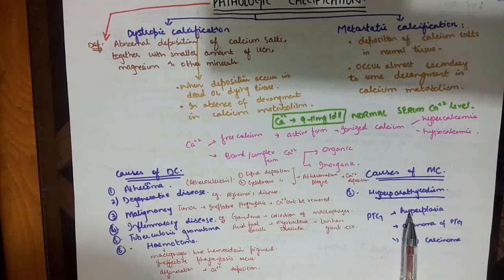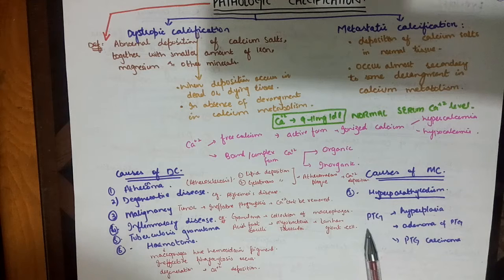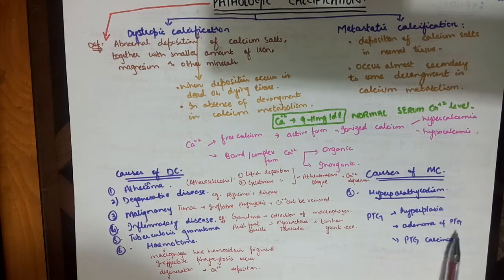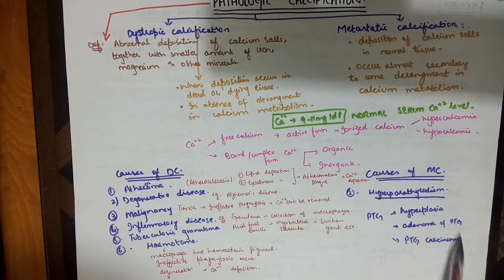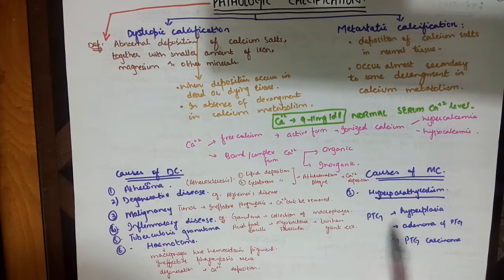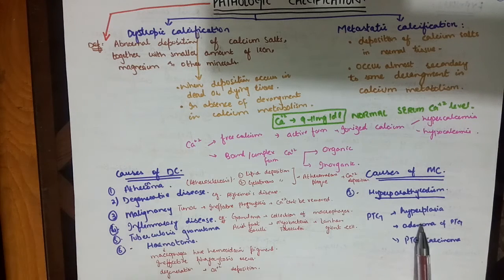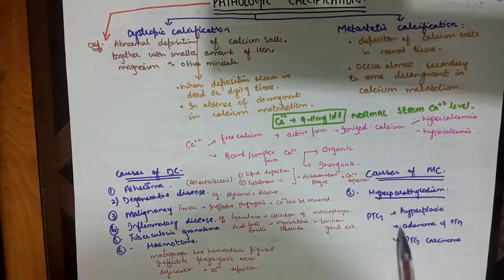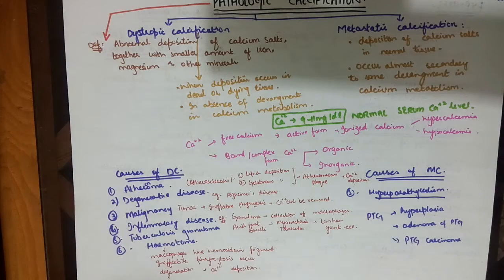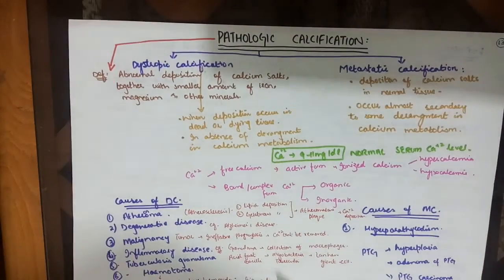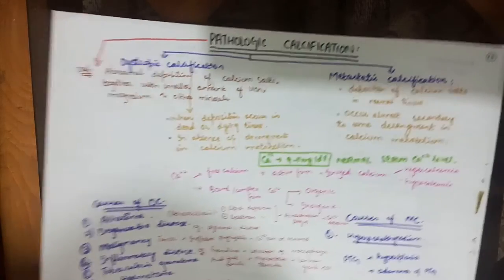The causes of metastatic calcification: the first is hyperparathyroidism. Any hyperplasia of the parathyroid gland, adenoma, or carcinoma of the parathyroid gland will lead to increased production of parathyroid hormone. This leads to hyperparathyroidism, meaning increased calcium levels, derangement in calcium metabolism, and ultimately metastatic calcification.